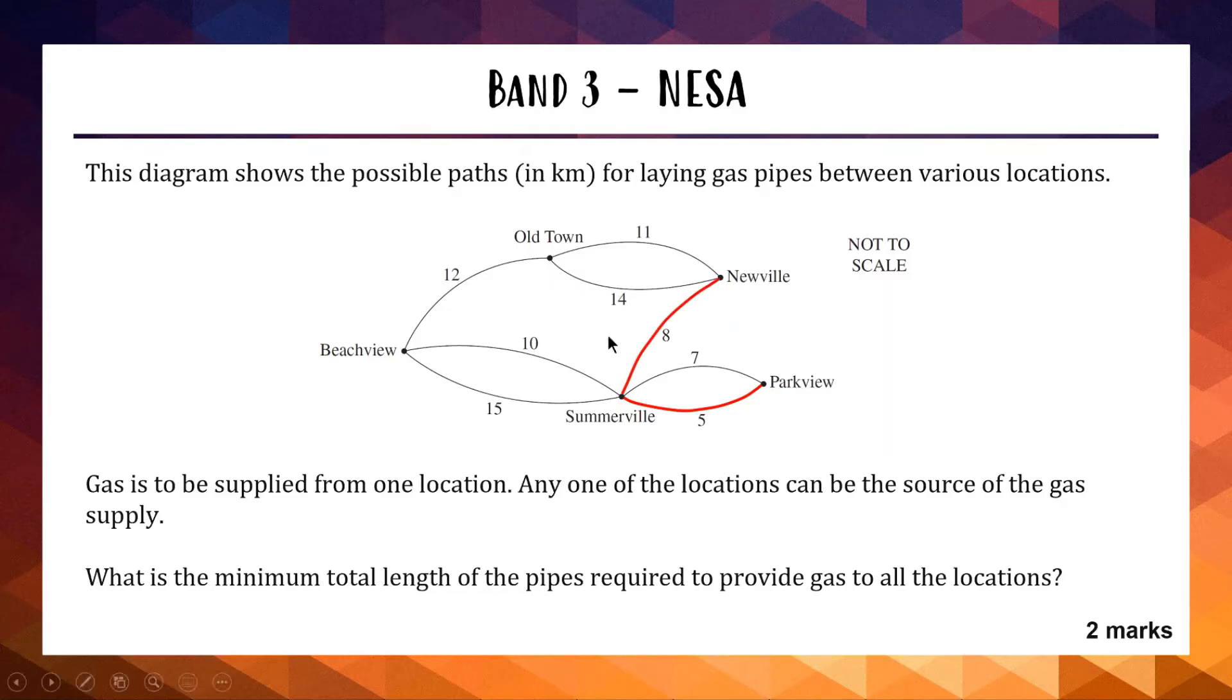The next shortest number is the 10, so we'll link Beachview and Somerville, and then the next shortest option is the 11 between Old Town and Newville. We have linked every single location together in a spanning tree. If we add up these weights, 5 plus 8 plus 10 plus 11, we get a total length of 34 kilometers. If you drew your spanning tree, you would have got one mark, and if you got 34 kilometers, you'd be getting two marks.